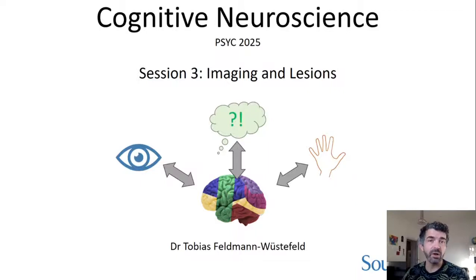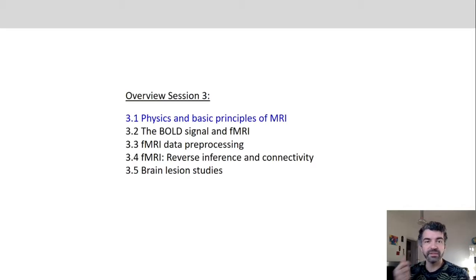Welcome to the third session in Cognitive Neuroscience in the Spring Semester 2021. Today we will cover imaging and brain lesions. First we will talk about physics and basic principles of MRI. Then we will talk about the BOLD signal which allows us to measure fMRI. Then we will be talking about fMRI data preprocessing, fMRI reverse inference, and fMRI connectivity. And eventually we will talk about brain lesion studies.